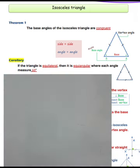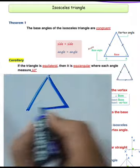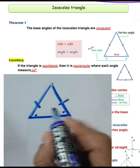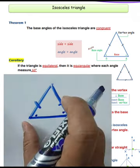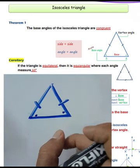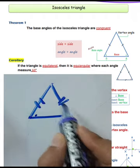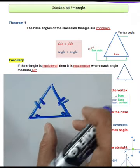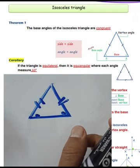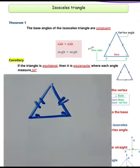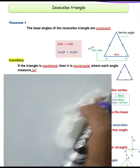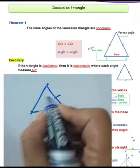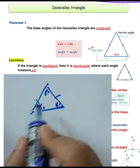In an isosceles triangle, the base angles are congruent, meaning equal in measure. If two sides are equal, then the two base angles will be equal. For an equilateral triangle, each angle equals 60 degrees.